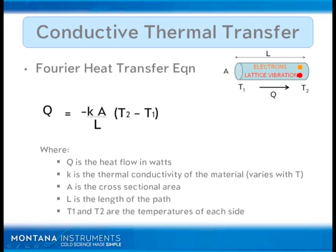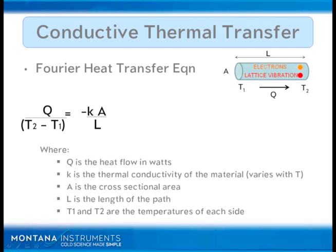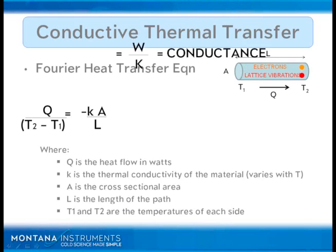As we get started here, there's a term I would like to introduce to you. If we move the temperature difference in the Fourier heat transfer equation over to the other side, we've got heat Q — the heat flow in watts — over the temperature difference. On the other side of the equation we've got K, A, and L. A and L are the geometrical constraints and K is the thermal conductivity of the material. By moving the temperature delta to the other side and setting T2 minus T1 equal to one Kelvin, we come up with the term conductance.